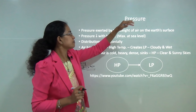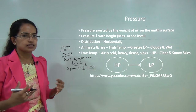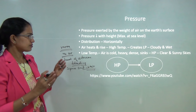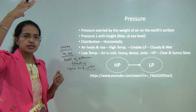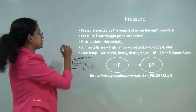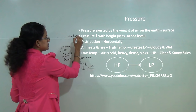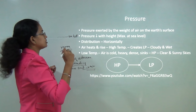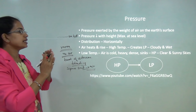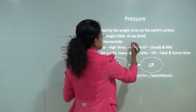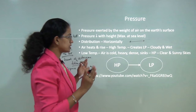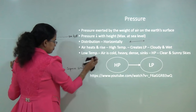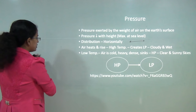Pressure is the weight exerted by air on the earth's surface. As we move up, pressure decreases — maximum pressure occurs at sea level, and as we go up there is a decrease in pressure. This is the vertical distribution of pressure. There is also horizontal distribution of pressure. To understand it, consider an air mass that is heated.